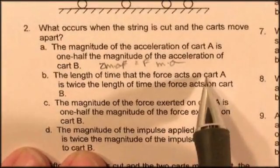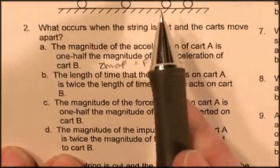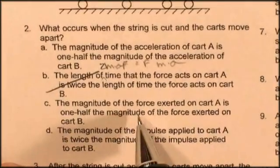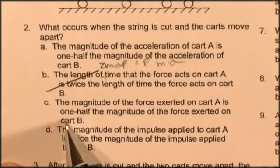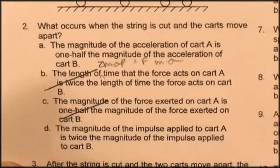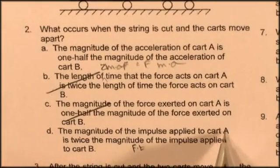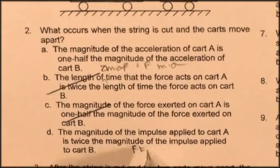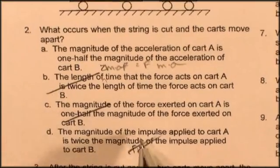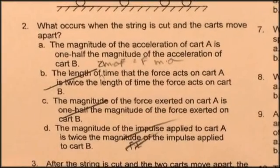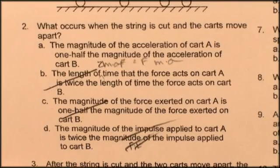The length of time that the force acts, well, that's silly. If the spring is pushing, it's going to be pushing on both for the same amount of time. The magnitude of the force exerted is one half? Nope, the force is the same. For every force, there's an equal and opposite force. The magnitude of the impulse, force times time applied to cart A, is twice the magnitude? Nope, time is going to be the same, force is going to be the same, impulse must be the same on both of them. Different masses, different change in velocities, but the same force, the same impulse.